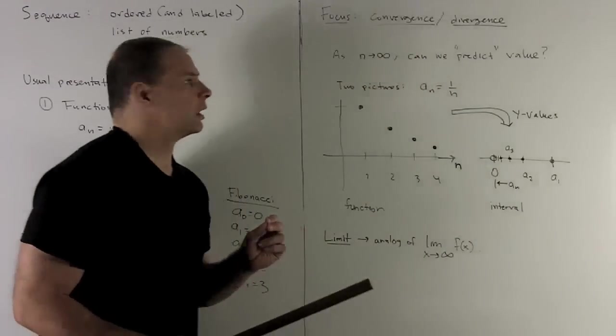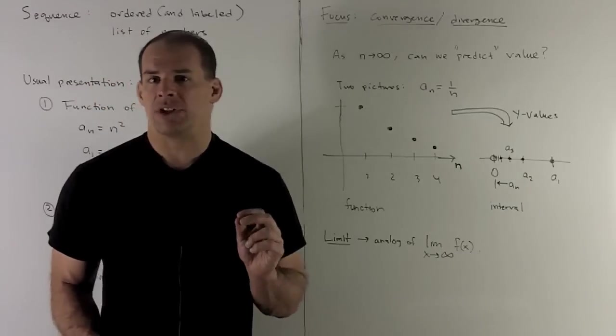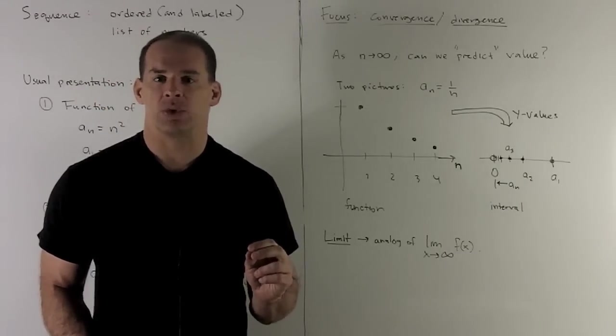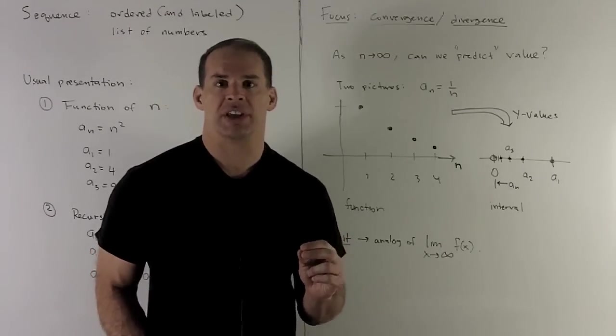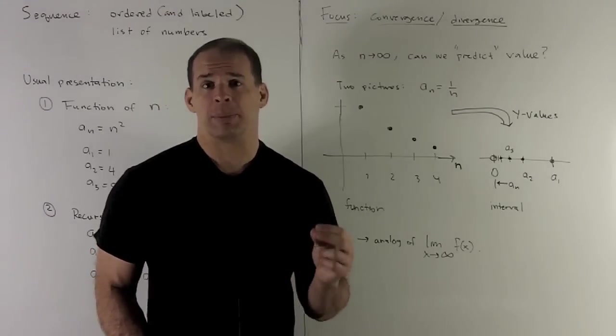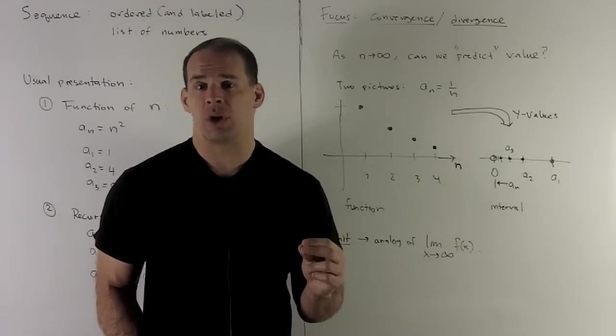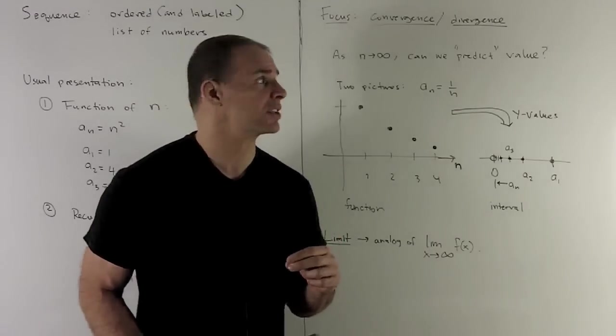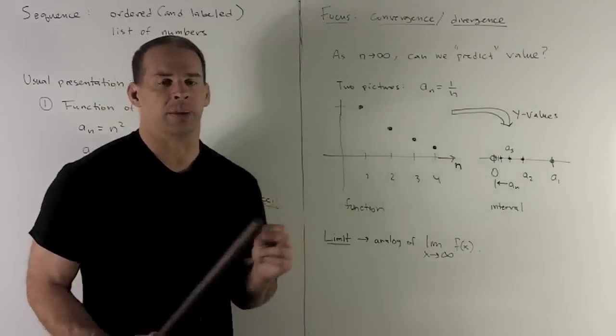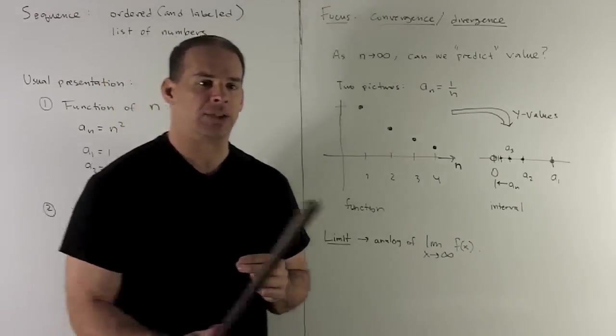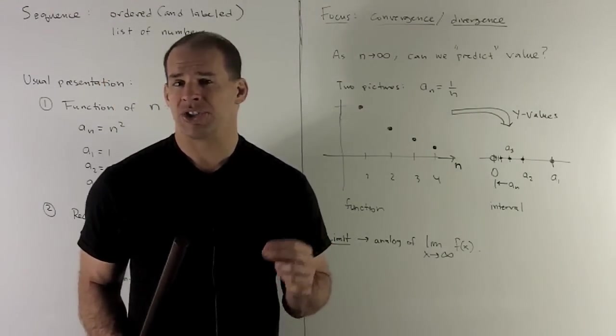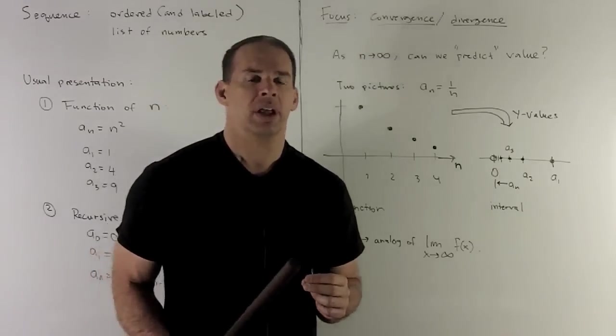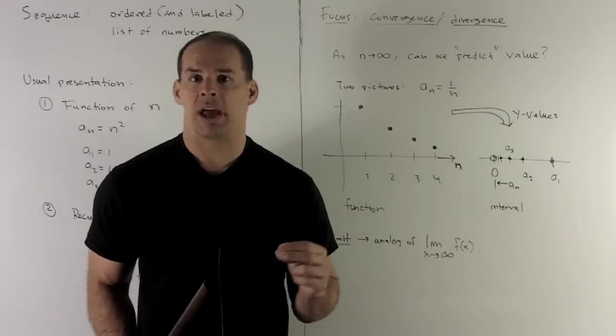So we have a definition for sequences. While there's a lot of things we could do with them, the first thing we're going to be interested in is a notion of convergence and divergence. This is the business of limits that we do with functions, only now applied to our new context. So the idea is going to be, as I let n go out to infinity, that's our index, can we predict where our sequence is heading towards? So it's going to be this business with limits and prediction.